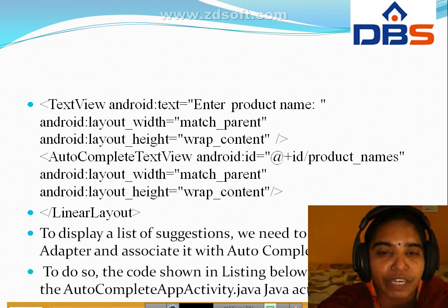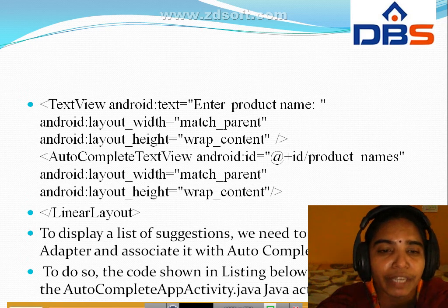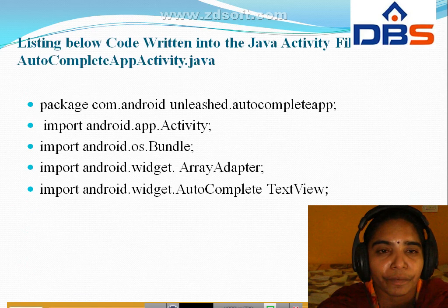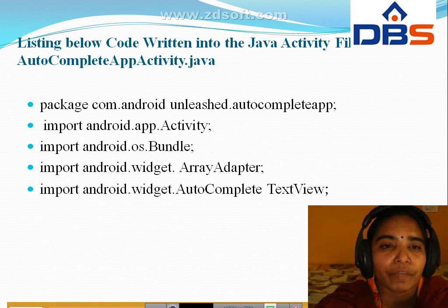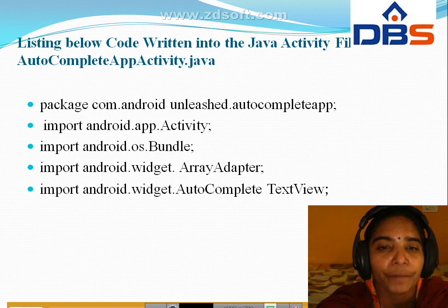To display a list of suggestions, we need to create an array adapter for that auto complete text view. You have to write the code in Java for auto complete app activity. The imports include: import android.app.activity, import android.os.bundle, import android.widget.arrayadapter — we use the array adapter here as one of the resources. Next, import android.widget.autocomplete text view.